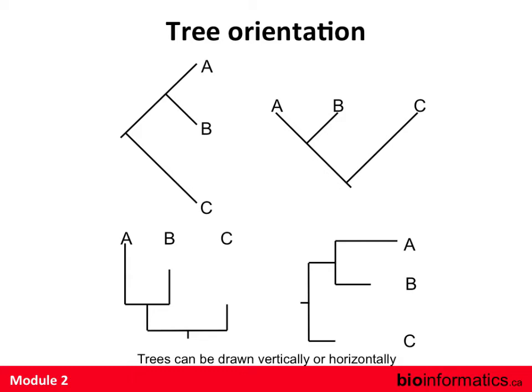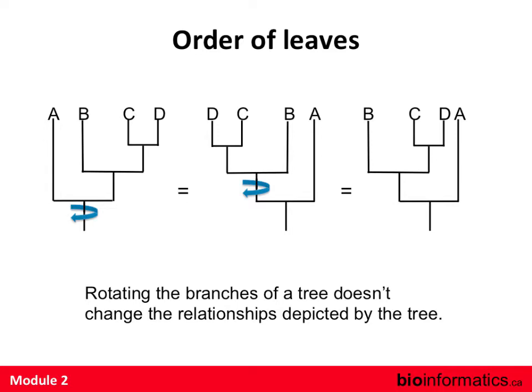Trees can be in any orientation — horizontal or vertical — which doesn't affect interpretation; it's just an arbitrary means of orienting the tree. The order of the leaves is also not informative. What is informative is only the connectivity of the nodes. You can rotate the branches around any node to get new orders between taxa without changing the evolutionary relationship. Any node can be rotated while preserving all the information in the tree.